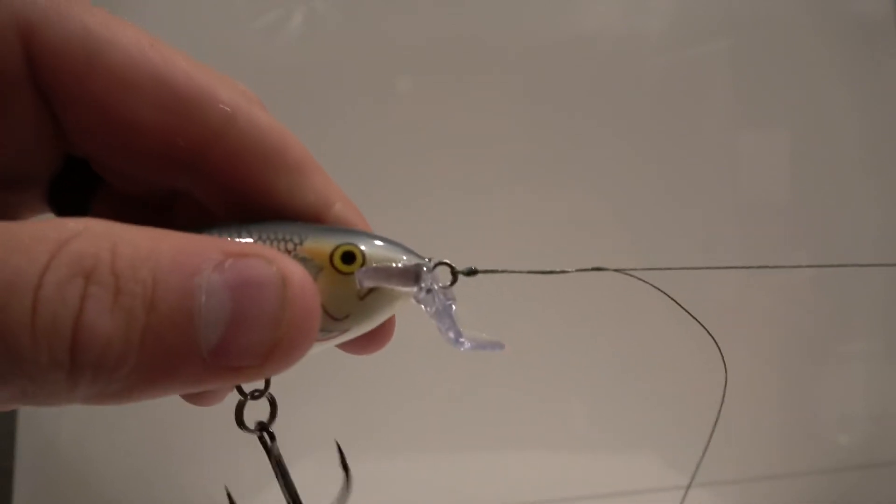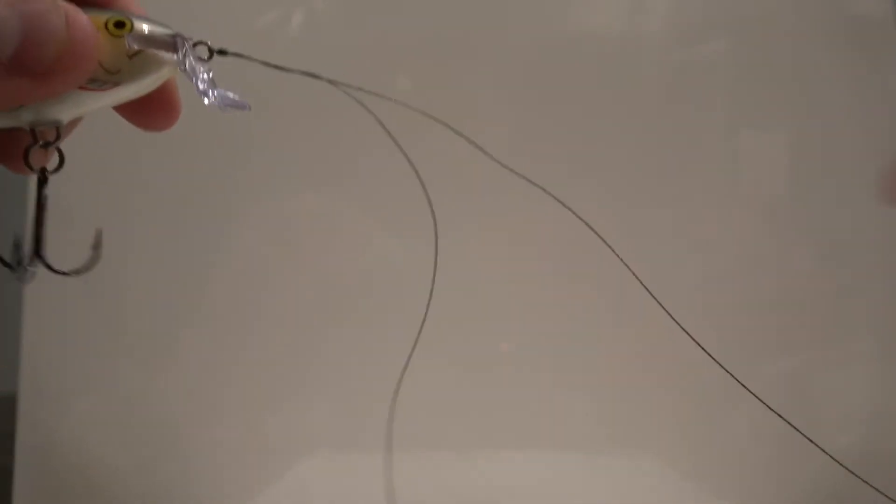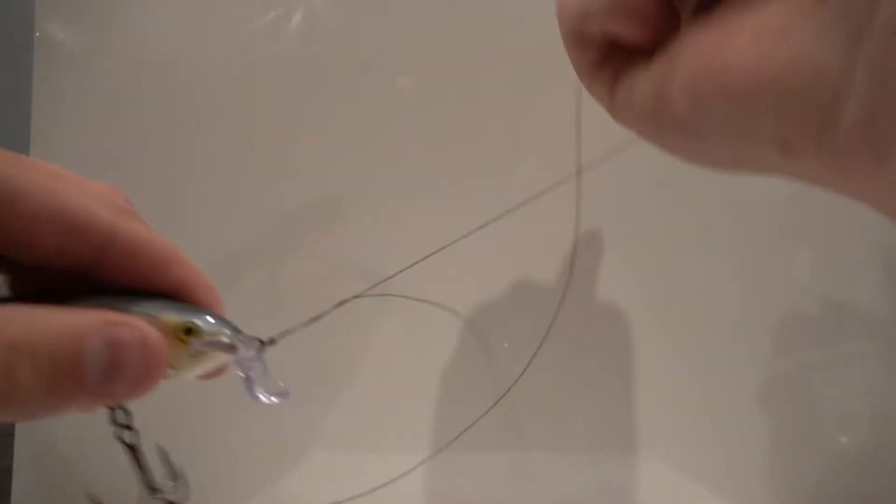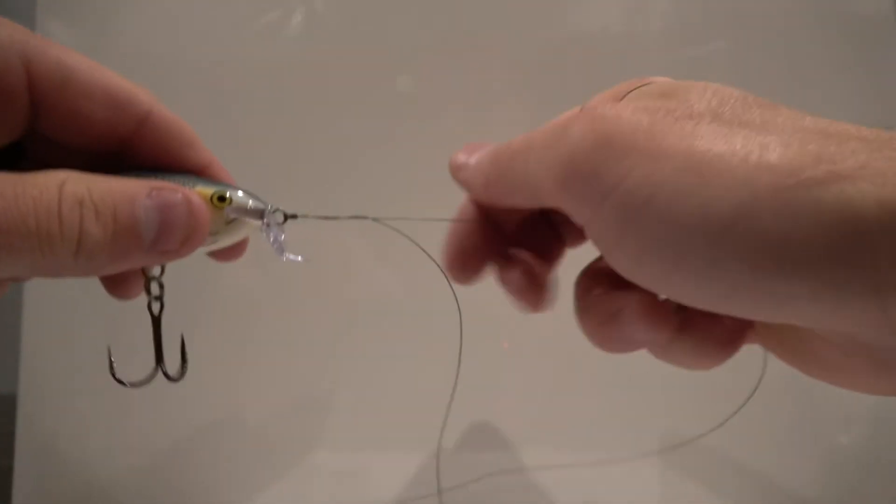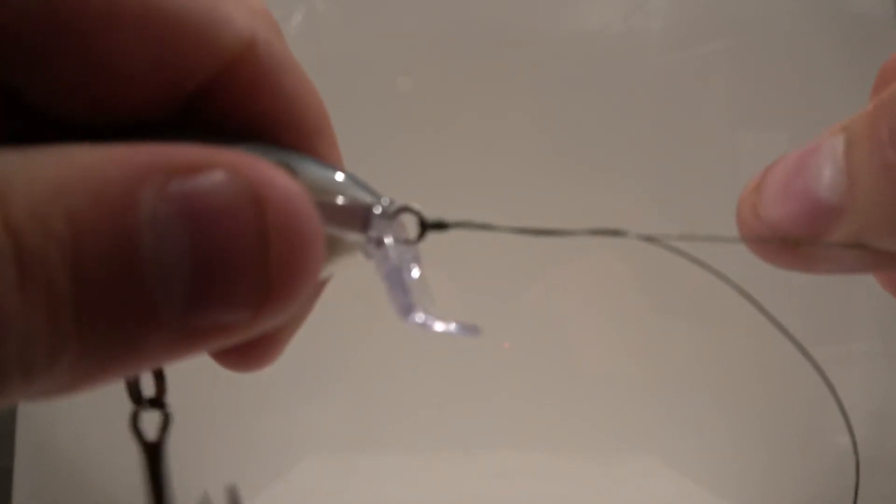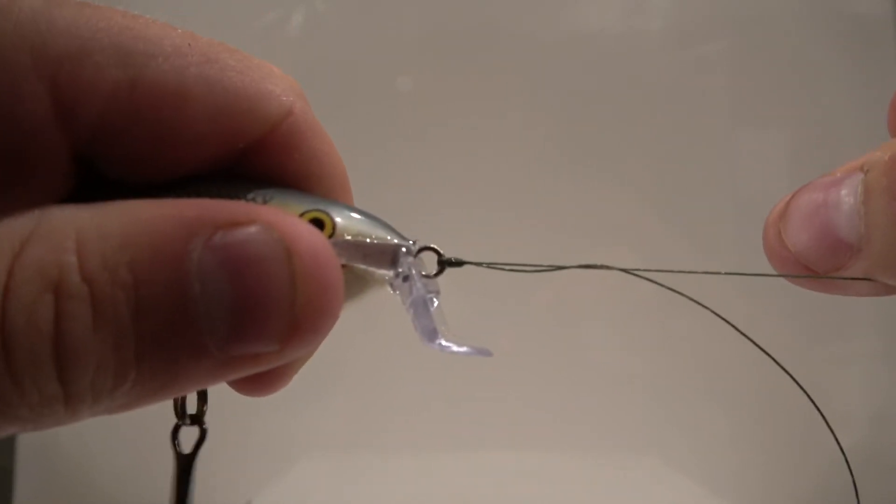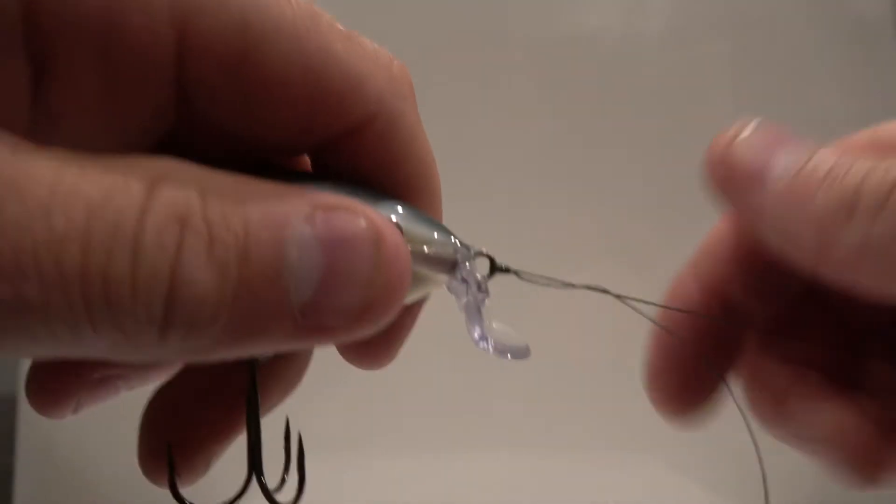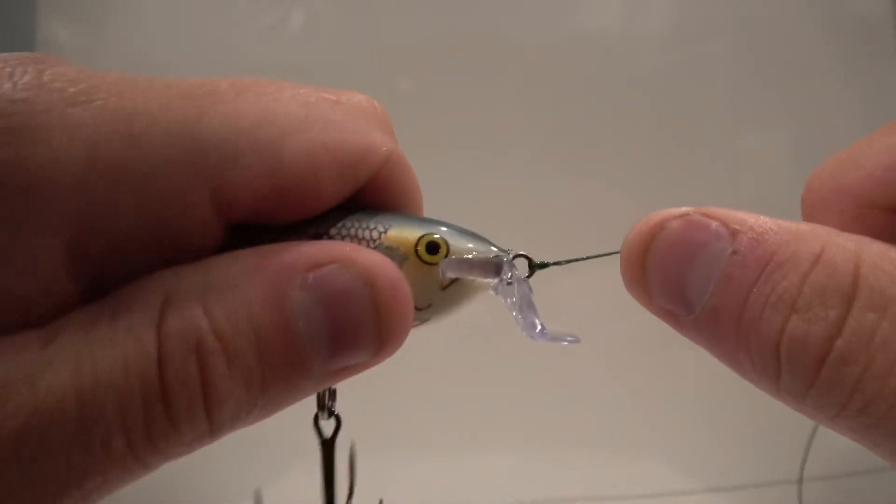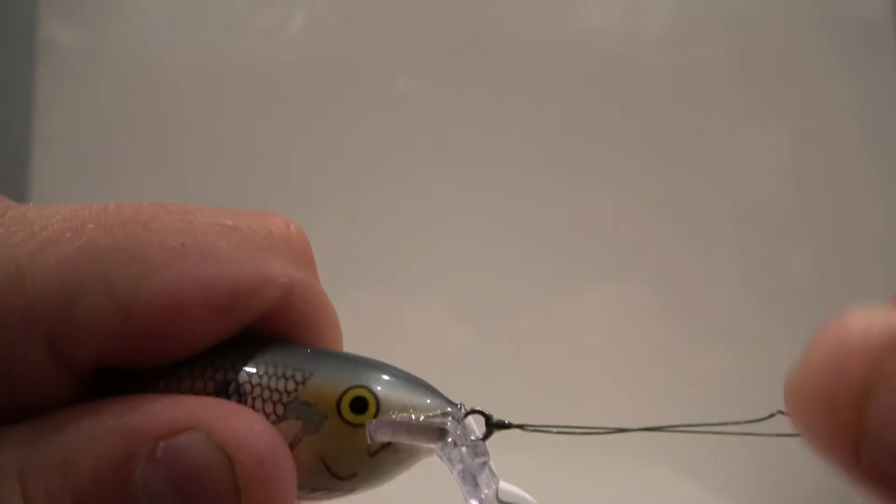Once it gets down to the bottom, I'll wrap the line around my hand a few times just to get a nice snug pull. Yeah, it's pretty snug there. That ain't going nowhere.